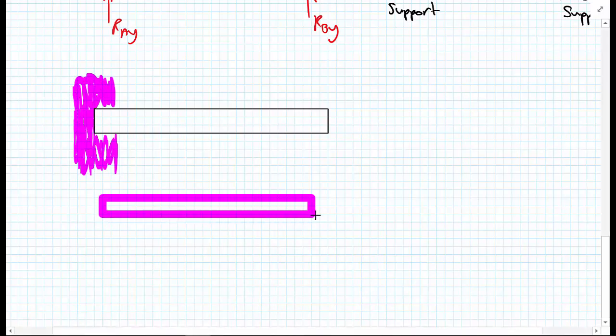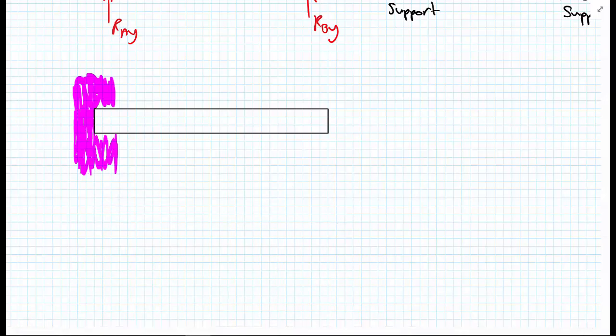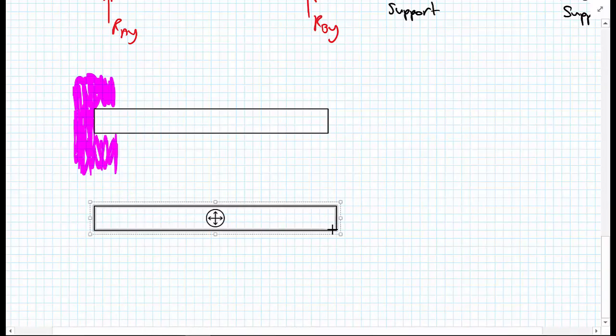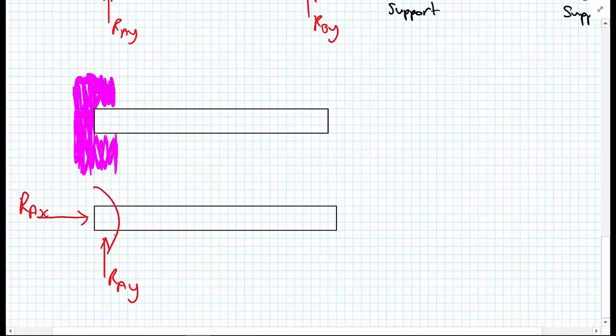We then said that the wall, because of the support condition, gave us a vertical support RAy, gave us a horizontal support RAx, but also gave us a moment support. We call this one MA.